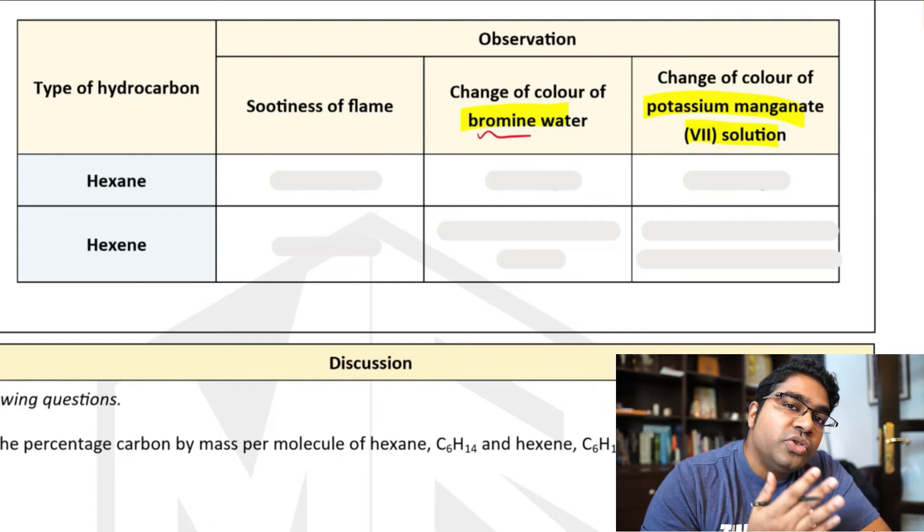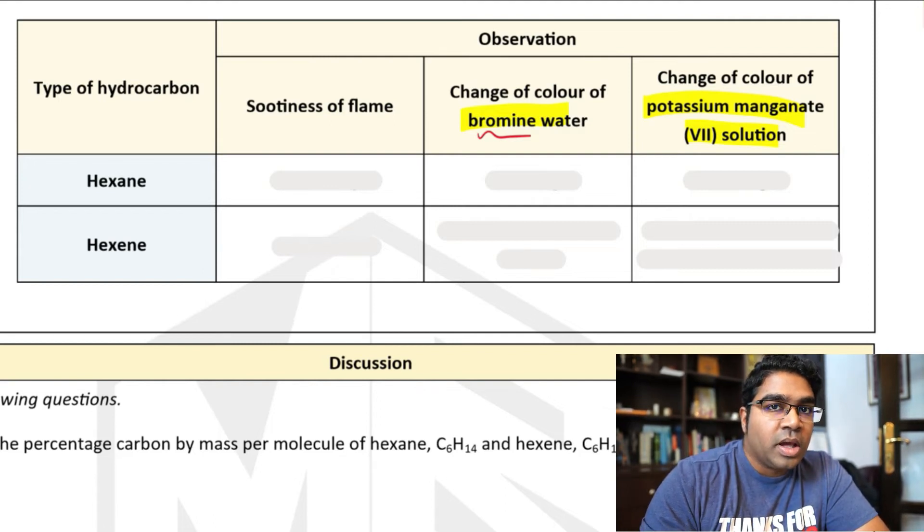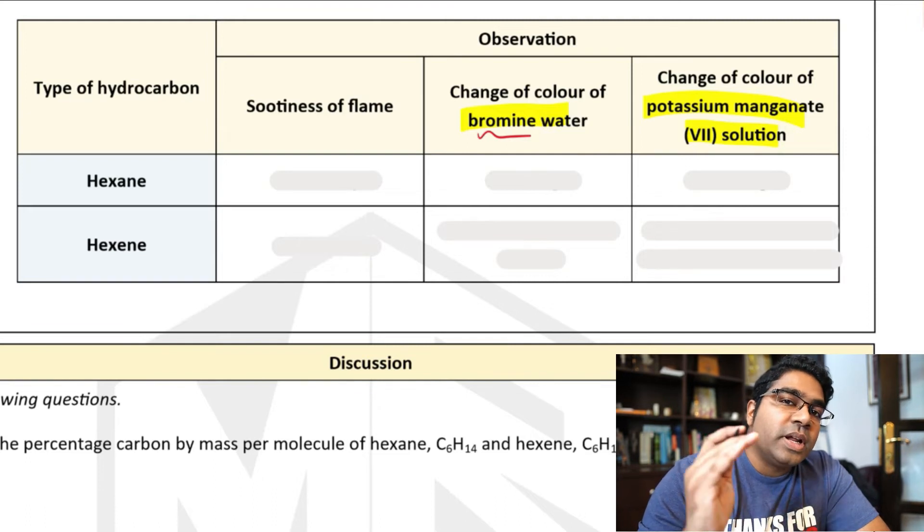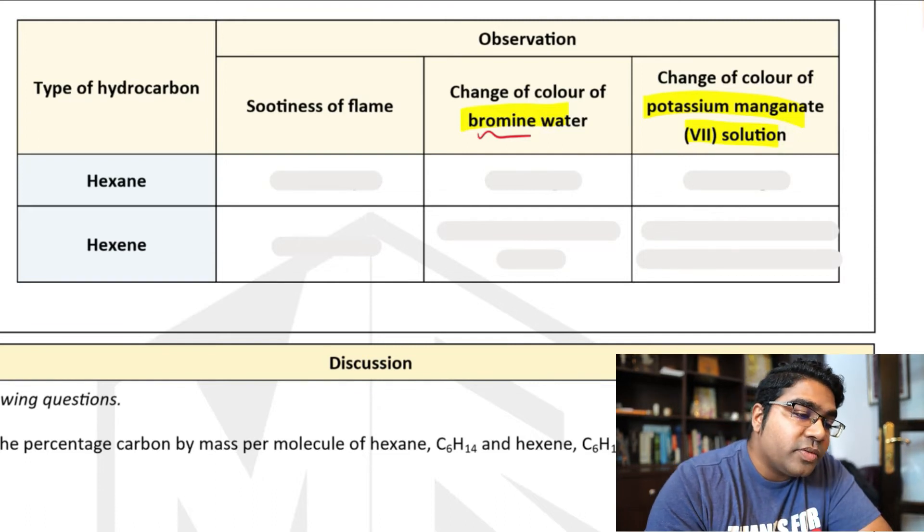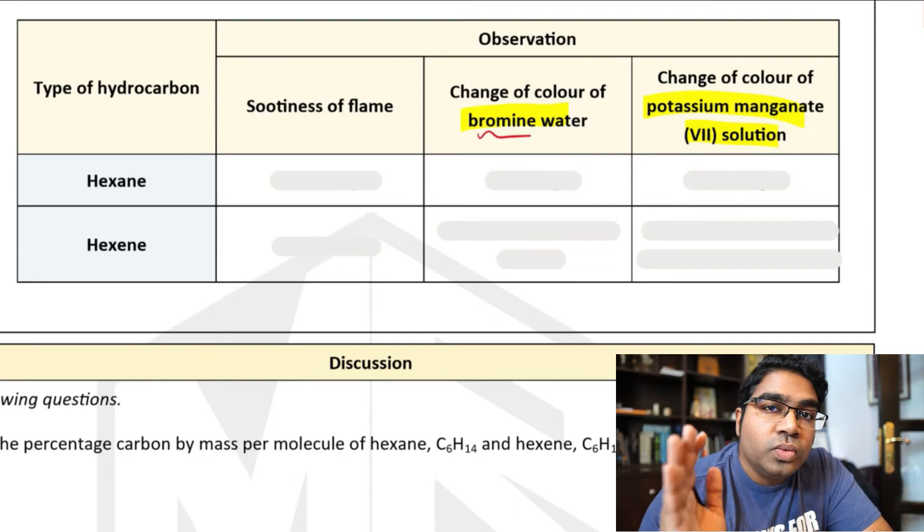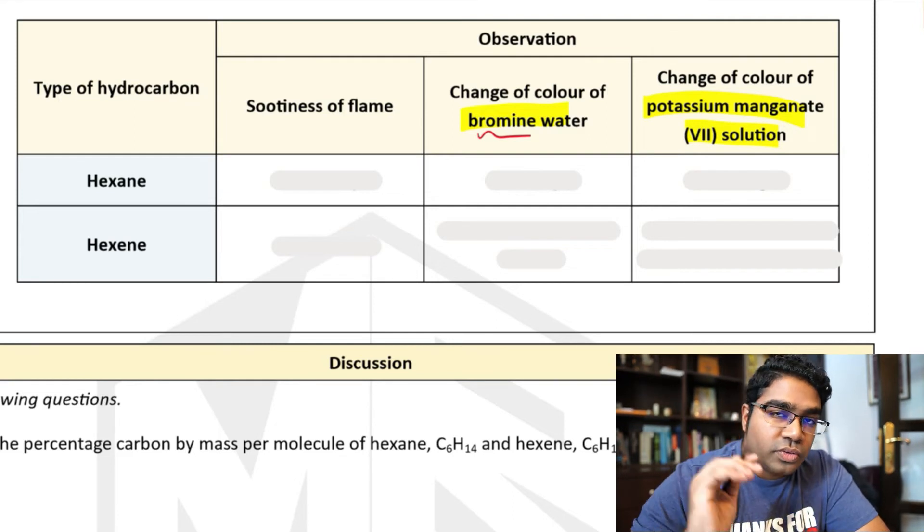Whereas alkanes do not undergo addition reaction. They can undergo substitution with halogens. However, that reaction must occur in the presence of UV light. And there's no UV light here.